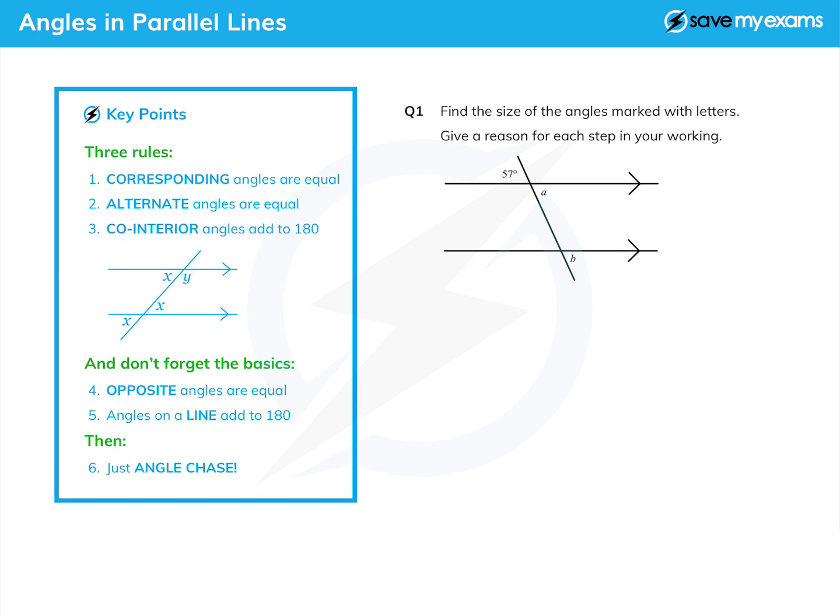There are three sorts of angles you need to be aware of and you need to know their names. When you have angles like these two x's here, which used to be called F angles, there is a backwards F for you, but we do call them corresponding angles now. So corresponding angles are equal. You need to be able to quote that.